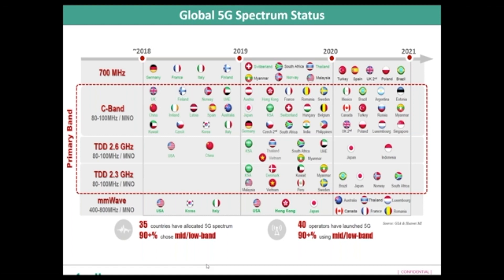Each band has different use cases — high band, mid band, and low band serve distinct purposes. More spectrum auctions are happening: auctions for 37, 39, and 47 GHz closed in March of this year; a 28 GHz auction happened prior; and a 3.5 GHz auction is planned by the FCC around mid-year. Overall, 5G caters to far more spectrum than what was used in the 4G timeframe.